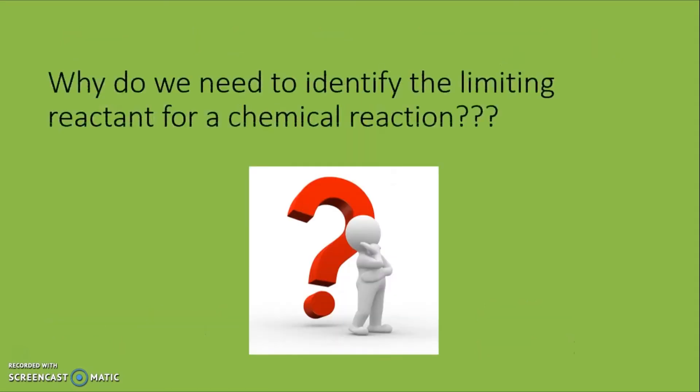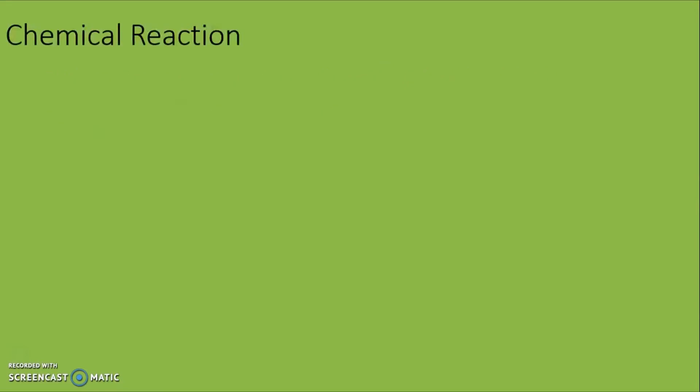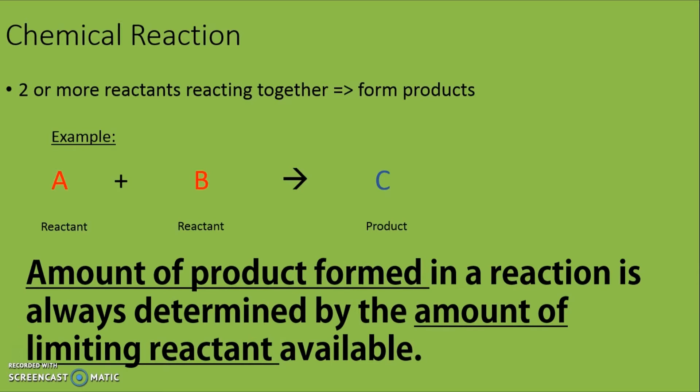So why do we need to identify the limiting reactant for a chemical reaction? For most chemical reactions that take place, there are usually two or more reactants reacting together to form products. For example, A reacts with B will produce C. So it is very important that we identify the limiting reactant, as the amount of product formed in a reaction is always determined by the amount of the limiting reactant available.